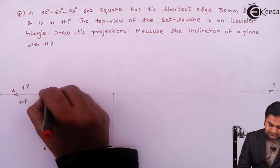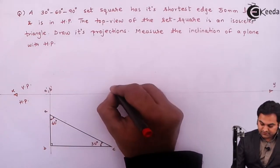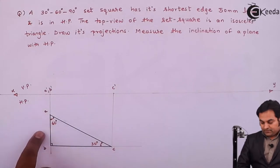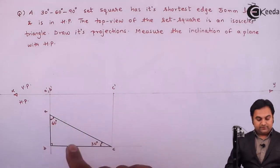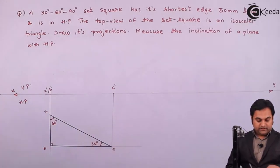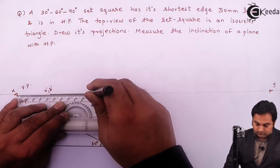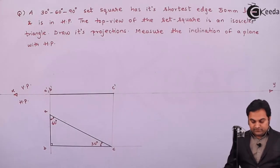Here the point is A dash, B dash and this is C dash. So this set square will be seen as a line in the front view. I'll make that line dark. So it is seen as a line.